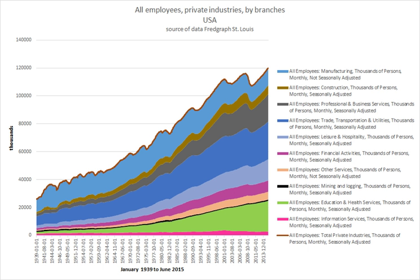Furthermore, productivity increases do not always lead to increased wages, as can be seen in the United States, where the gap between productivity and wages has been rising since the 1980s. Researchers at the Overseas Development Institute argue that there are differences across economic sectors in creating employment that reduces poverty. This study showed that other sectors were just as important in reducing unemployment, such as manufacturing. The services sector is most effective at translating productivity growth into employment growth. Agriculture provides a safety net for jobs and economic buffer when other sectors are struggling.